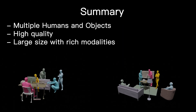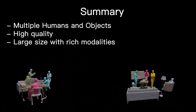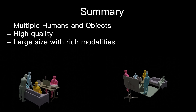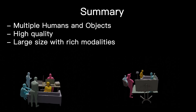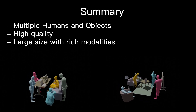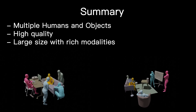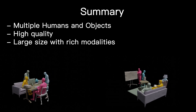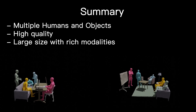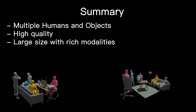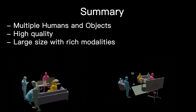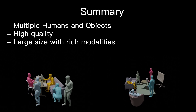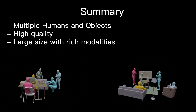In conclusion, this work presents HOI-M3, a pioneering dataset designed for capturing interactions involving multiple humans and objects. Key features of our HOI-M3 dataset include: 1. Multiple humans and objects, 2. High quality, and 3. Large size with rich modalities.